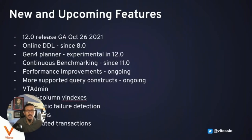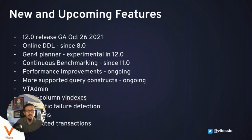Vitesse has many new and upcoming features. As of today, we have a 12.0 release in GA, supporting online DDL operations without locking. Vitesse comes with an experimental version of the Gen4 planner, which is highly improved. We do continuous benchmarking — the subject of this talk — and have ongoing performance improvements and tools like VTAdmin coming up in the next release.